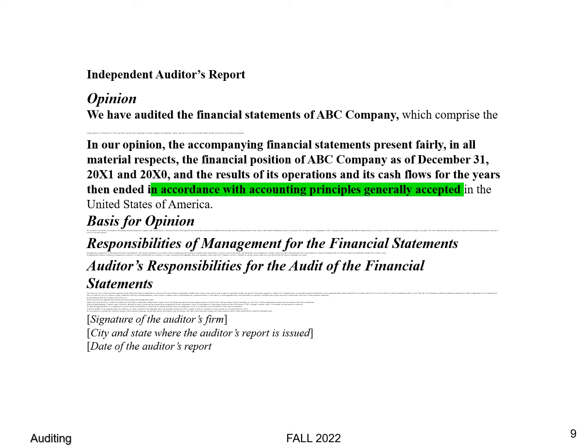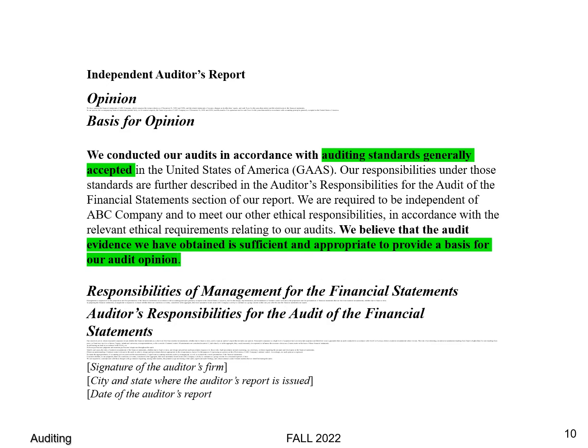The first term is Generally Accepted Accounting Principles — the report uses the phrase "in accordance with accounting principles generally accepted in the United States." Then we've got Generally Accepted Auditing Standards — GAAP and GAAS. Don't get them backwards. They've also changed the wording slightly to "Auditing Standards Generally Accepted in the United States."